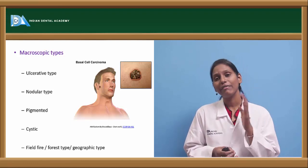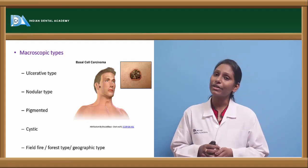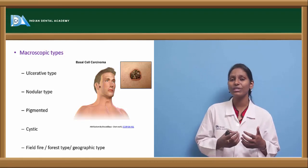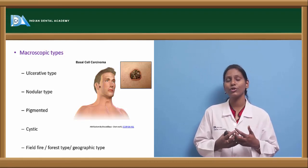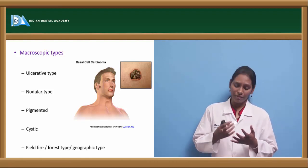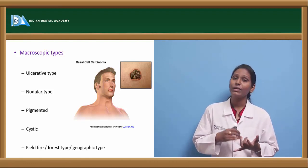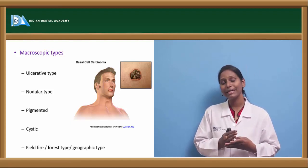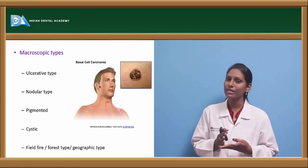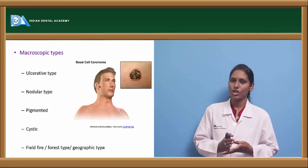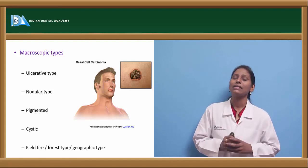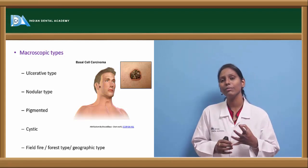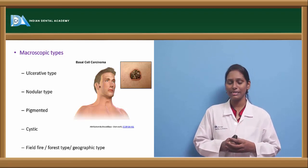We also have a microscopic classification — variants of basal cell carcinoma based upon histology. We have ulcerative type, nodular type, cystic type, pigmented type, and field fire or geographic type. Among all these, the ulcerative type of basal cell carcinoma is usually the most predominantly seen.